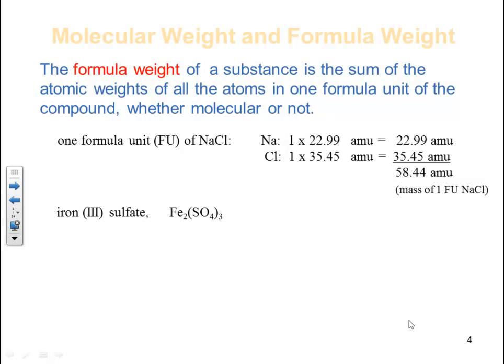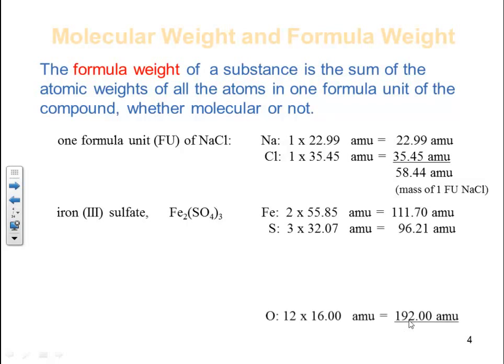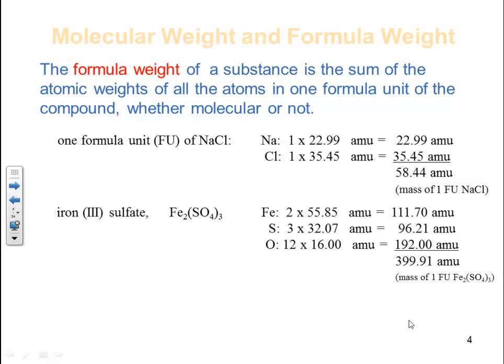For iron(III) sulfate: you have 2 iron ions at 55.85, 3 sulfurs at 32.07, and 12 oxygens at 16.0 — that's SO₄ with three of those, so 3 × 4 = 12 oxygens. This gives 399.91 amu, which is the mass of one formula unit of iron(III) sulfate.